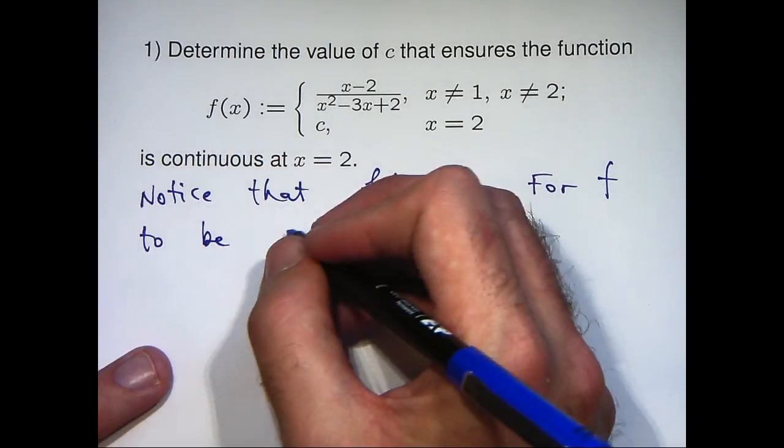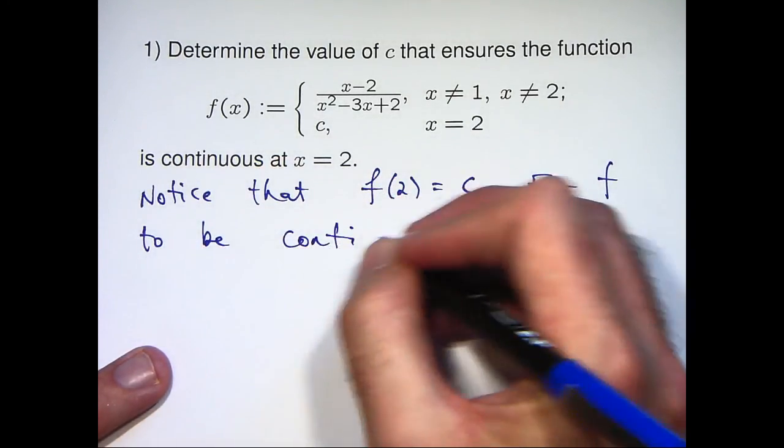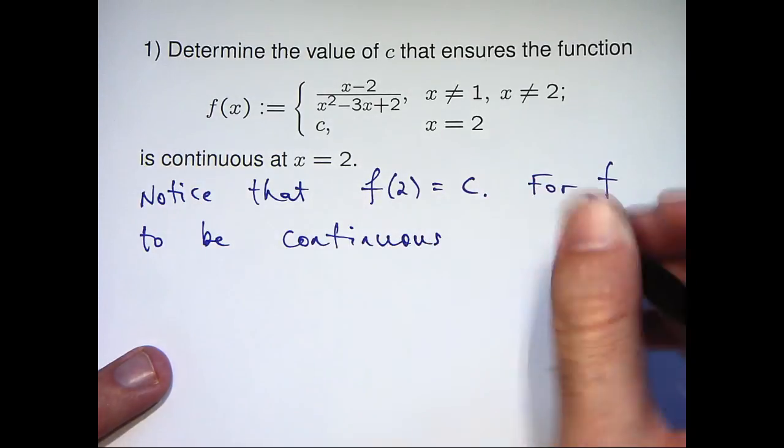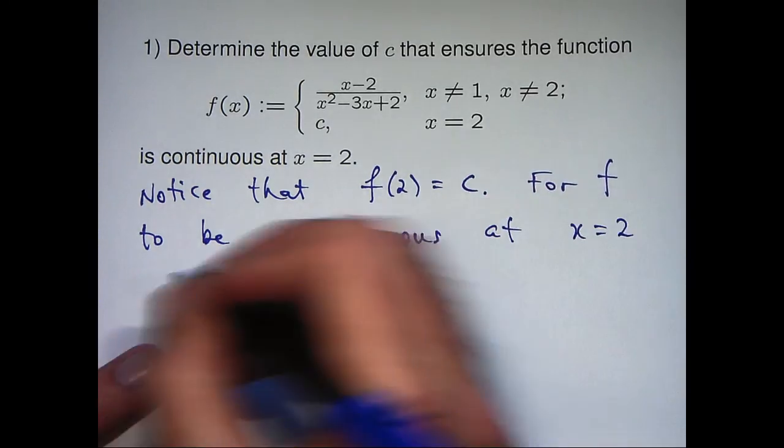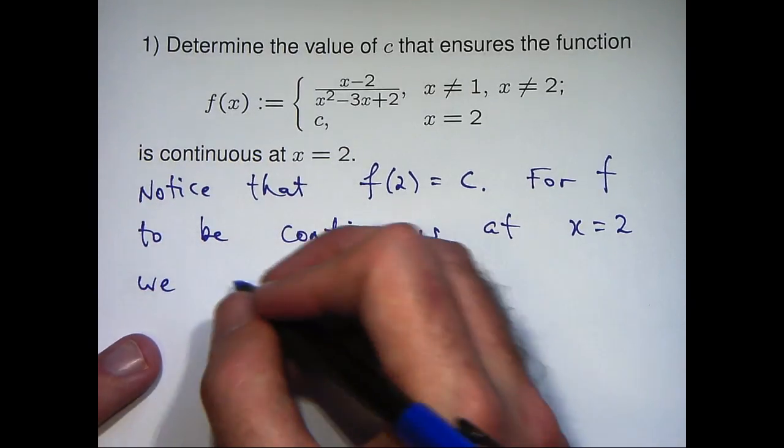x equals 2, well, we'll come up with the following. For f to be continuous at, say, the point x equals 2,